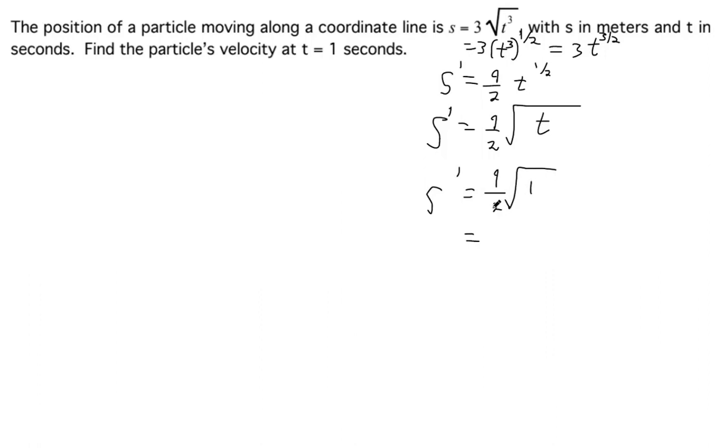So the square root of one is just one. So nine-halves times one is just nine-halves. So that's the velocity. So nine-halves meters per second is the velocity.